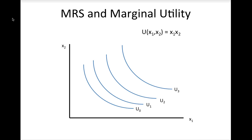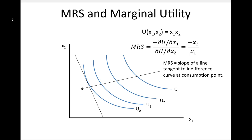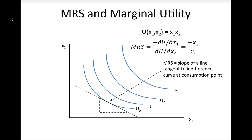For this Cobb-Douglas utility function, the marginal rate of substitution is the ratio of x2 to x1. Another way to think about the marginal rate of substitution is that it is the slope of a tangent line to the indifference curve at the consumption point. When the consumer is consuming a lot of good 2 and a little of good 1, the tangent line is steep and the consumer is willing to give up a lot of good 2 to get one more unit of good 1. When the consumer has more of good 1, the tangent line is flatter and the MRS is smaller, indicating that the consumer is willing to give up less of good 2 to get more of good 1 as we move down the indifference curve. This is another example of diminishing marginal rate of substitution that we first learned about in the previous lesson.